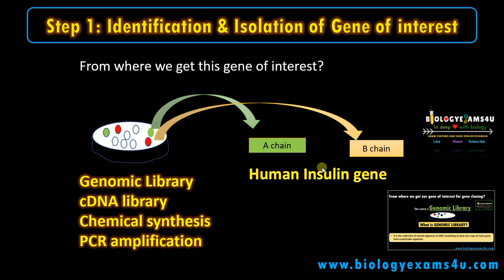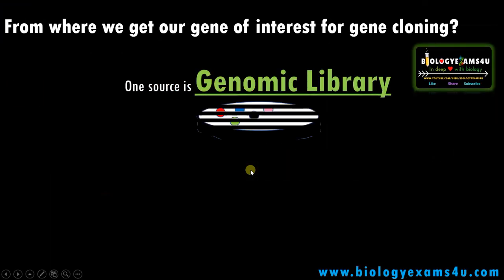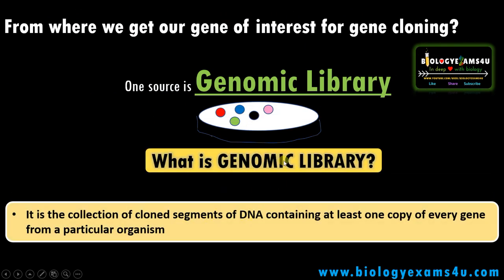If you are studying a gene for the first time, we need to construct a genomic library. A genomic library is a collection of cloned segments of DNA containing at least one copy of every gene of that organism under study. Suppose this is a genomic library of a virus that contains five genes — each colony contains a gene of that virus. So this can be called a genomic library of that virus. We have given a detailed video on the making of a genomic library; you can refer to that for more.